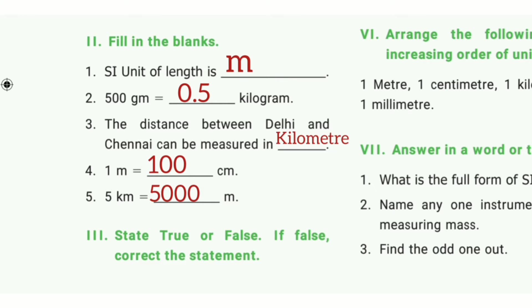Third one: The distance between Delhi and Chennai can be measured in dash. The answer is kilometer. Fourth one: 1 meter equals dash centimeters. The answer is 100 centimeters. Fifth one: 5 kilometers equal to dash meters. The answer is 5000 meters.